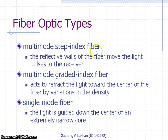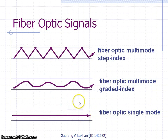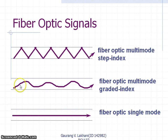In multi-mode step index fiber, the reflective walls of the fiber move light pulses to the receiver in a zigzag pattern. In multi-mode graded index fiber, the variation in density reflects light towards the center of the fiber, causing it to travel in a wave-like path. In single-mode fiber, light is guided straight down the center of an extremely narrow core, appearing as a straight line.